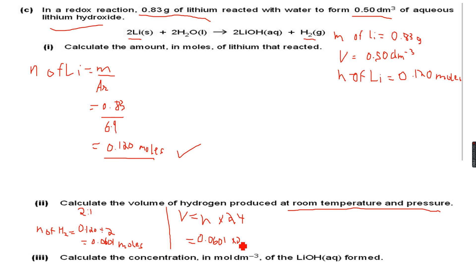Which is 0.0601 times 24, which is the number of dm³ occupied by one mole of a gas at room temperature and pressure. So when I do this calculation, I get 1.44 dm³, correct to three significant figures. So this is the volume of hydrogen that has been produced.